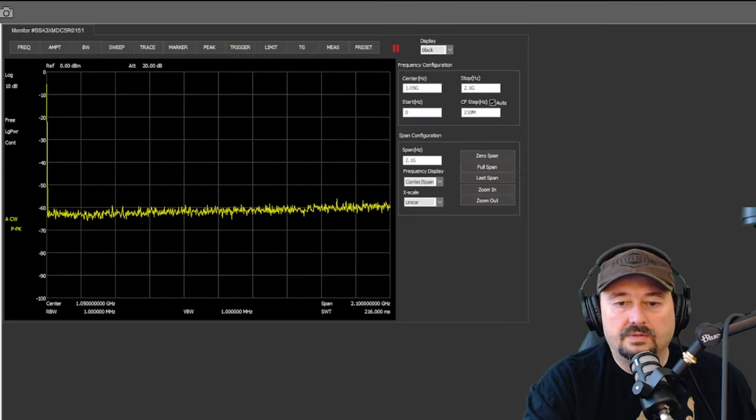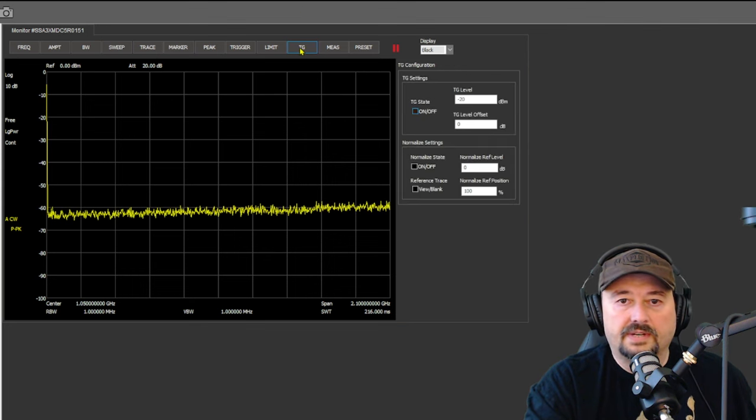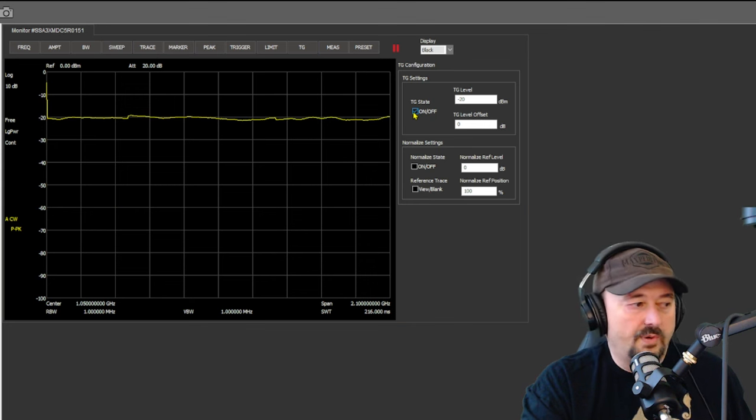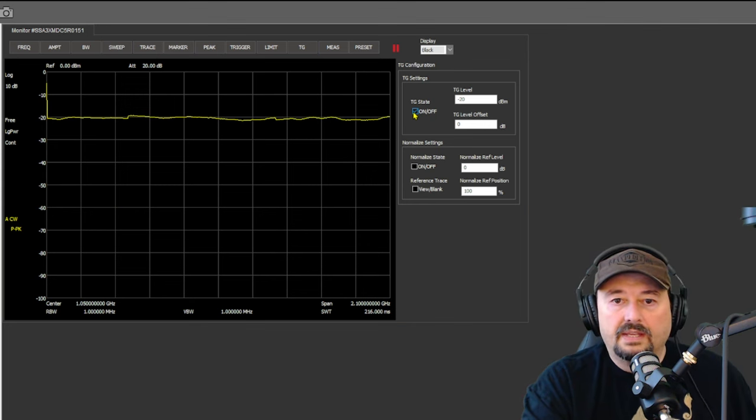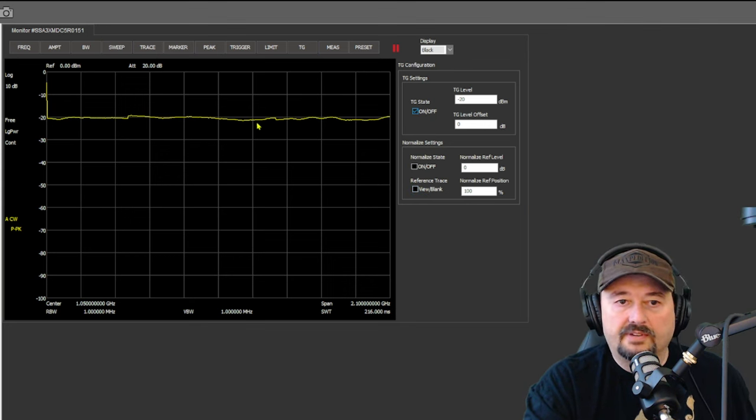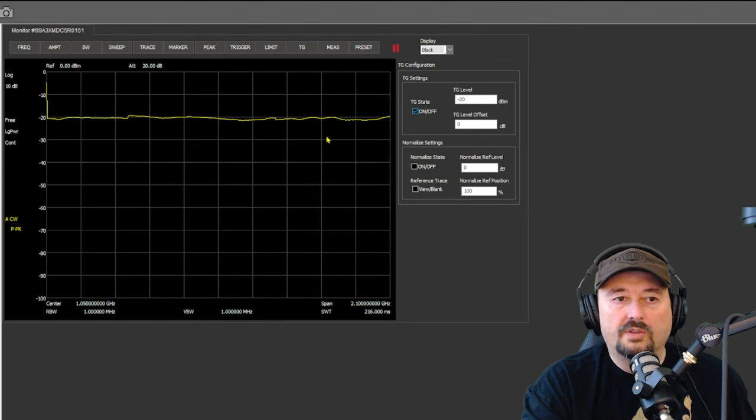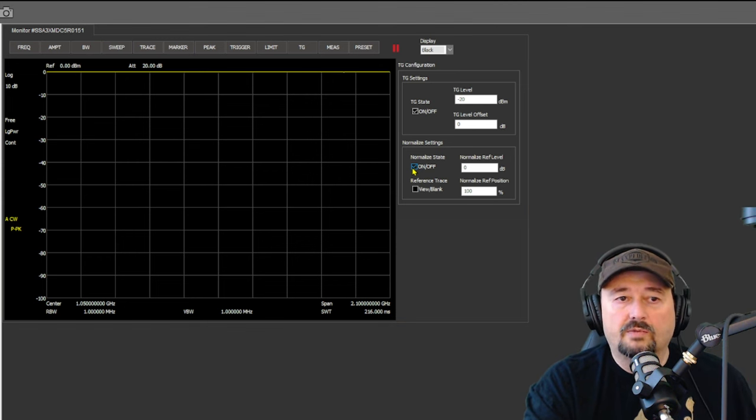So what I want to do is I'm going to turn on the tracking generator. And I do that like this. Tracking generator state on. And what that's doing is feeding the signal out my tracking generator port and into my RF input. Now, what I want to do is normalize this because you can see that we do have some variation in here. And that is a result of the cables and the connector that we're using. So by normalizing that, I basically null that out. So let me go ahead and do that. And now what you see is we have a flat line across the top. And we're ready to connect our attenuator in series with our lead cables.